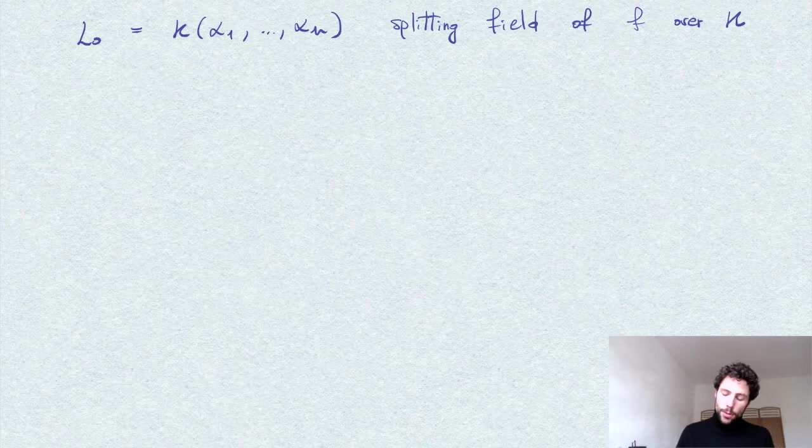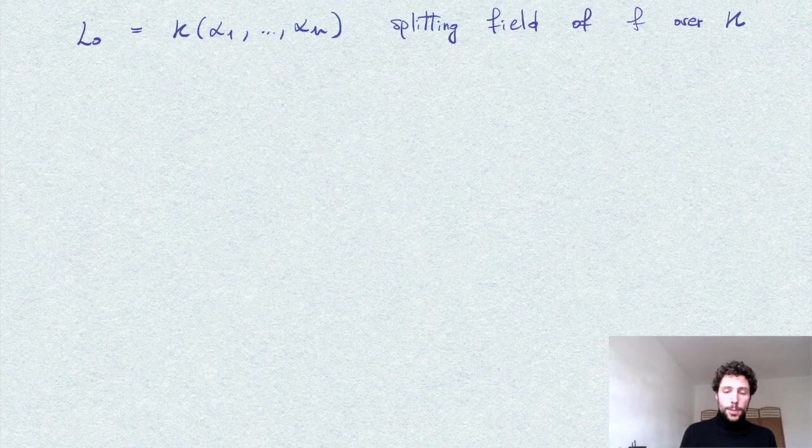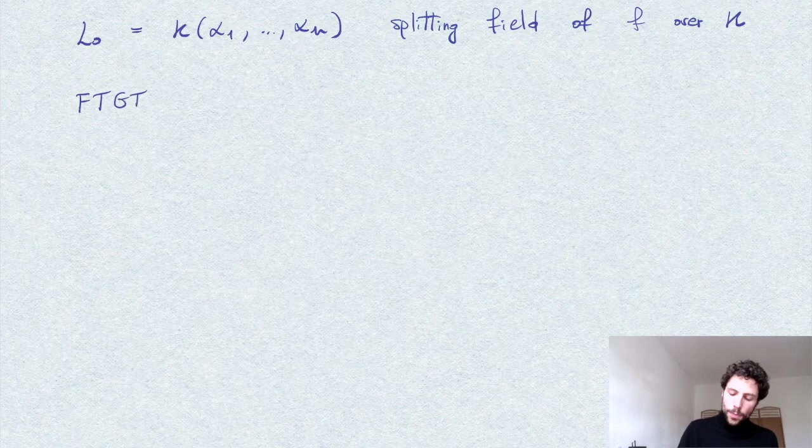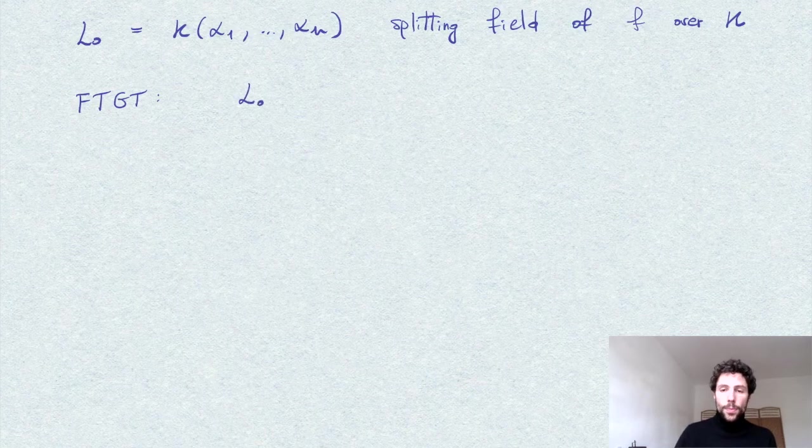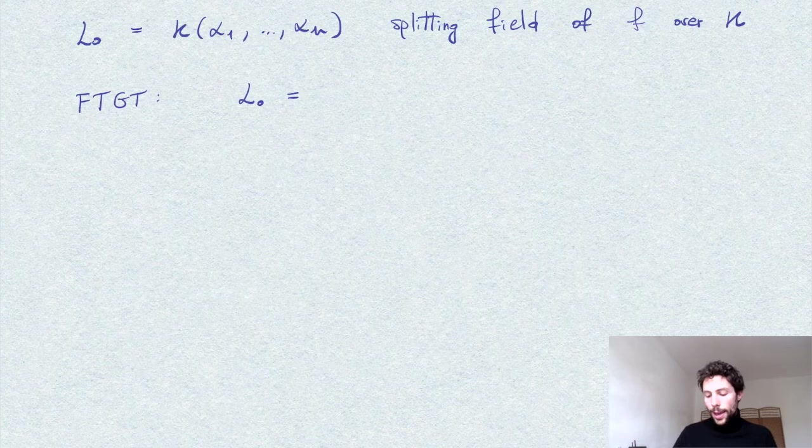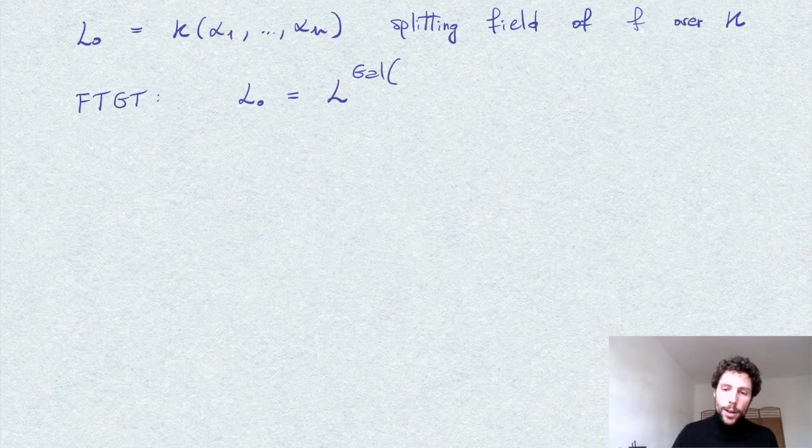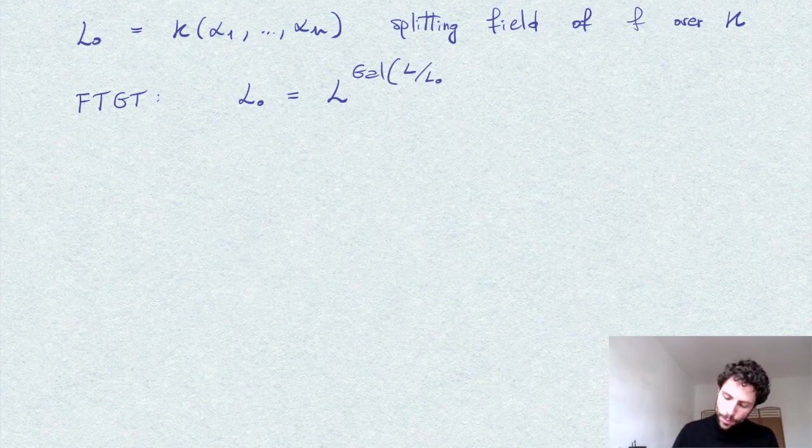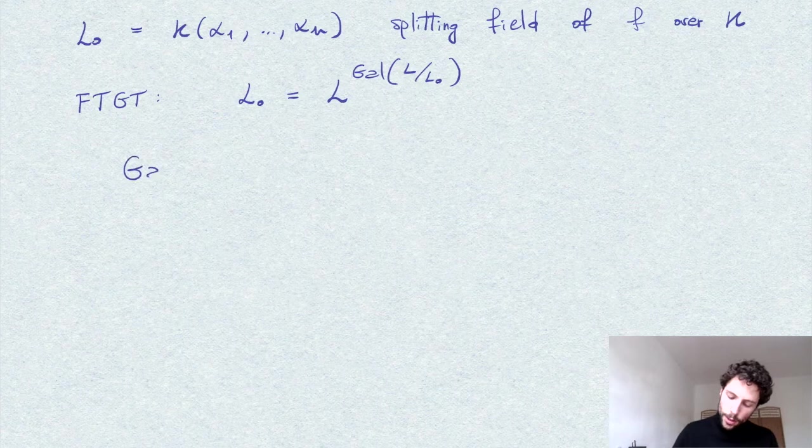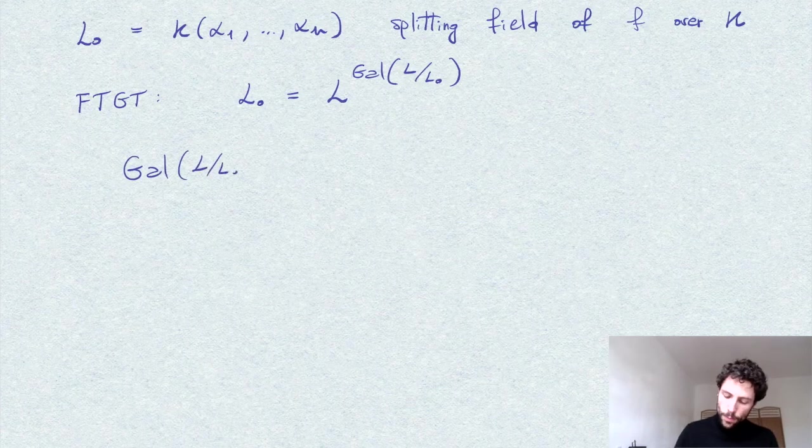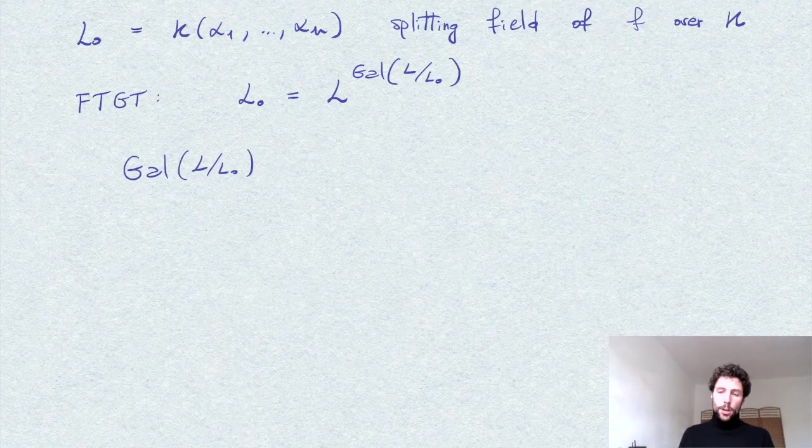So one way, for example, is to apply what we know, the Galois correspondence or the fundamental theorem of Galois theory, which tells us that this L_0 is the fixed field by the Galois group of L over L_0. So let's take a look at this Galois group here. By definition, these are the elements of G which restrict to the identity on L_0.